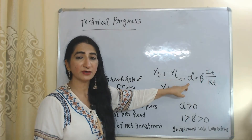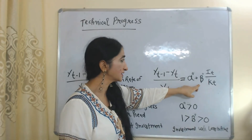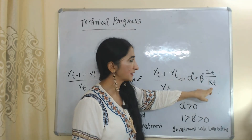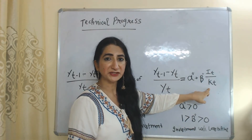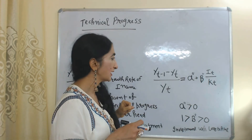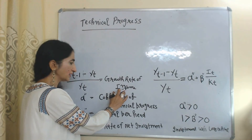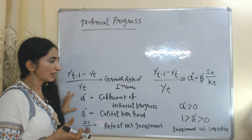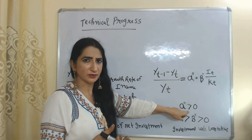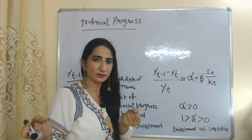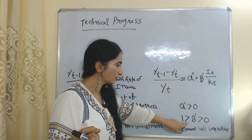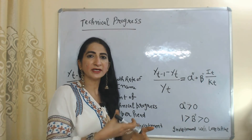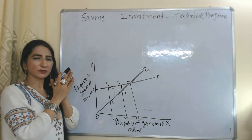Beta double-dash means capital per head. IT means current year investment, KT means current year capital, and IT over KT mainly represents our net investment — how much we are investing relative to current capital. According to this equation, the growth rate of income depends on technical progress and net investment. Technical progress must always be greater than zero, and beta double-dash is always greater than zero but less than one, meaning investment should be less than capital.